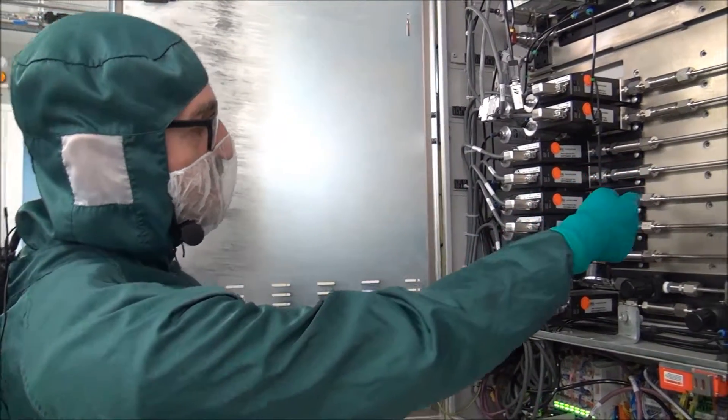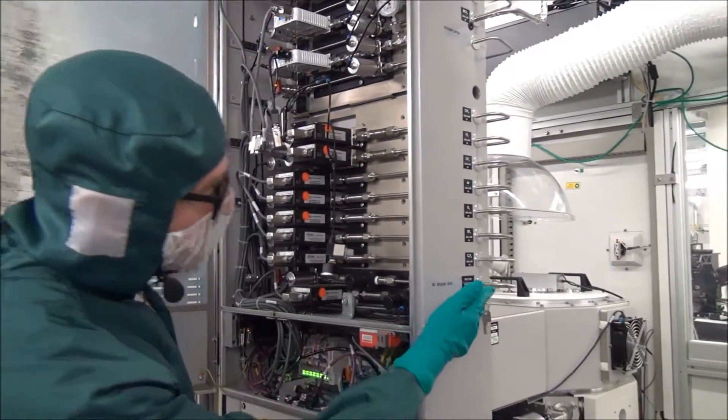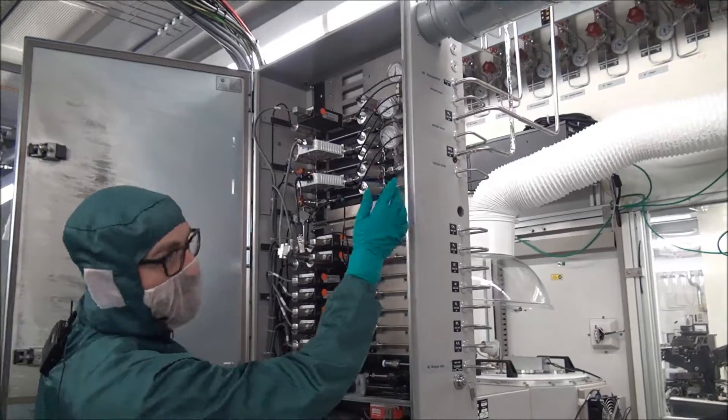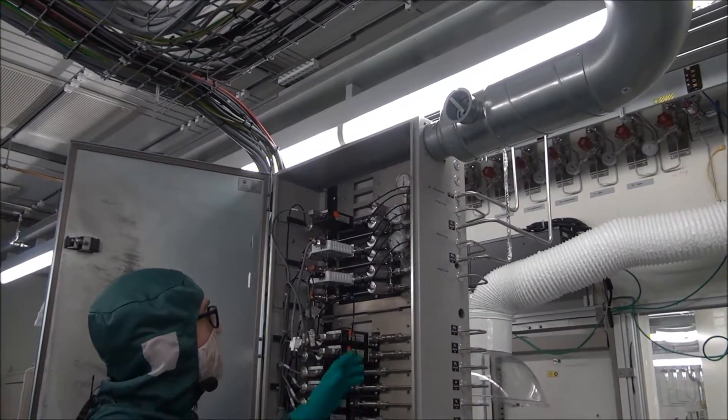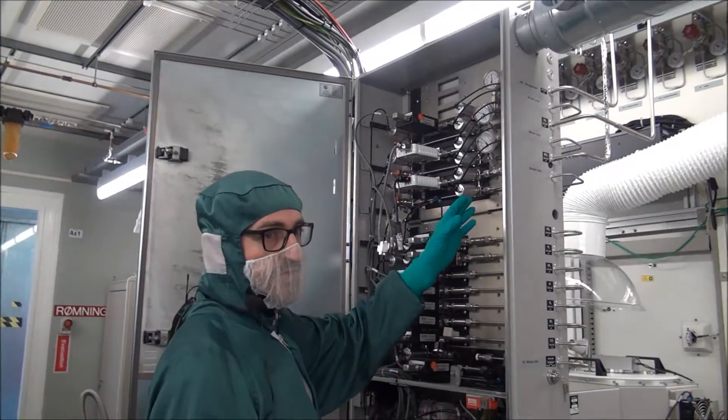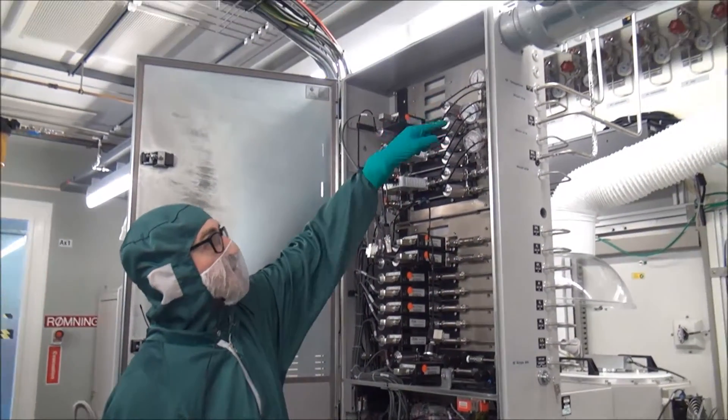And then we have some filters just before the mass flow controllers. And if you look on the right hand side you can also see where all the gases are coming in, up at the top part of the gas box. So we have the toxic gases, and on this particular system we have BCL3, CL2, and HBr. And you can also see them on the pressure gauges too.